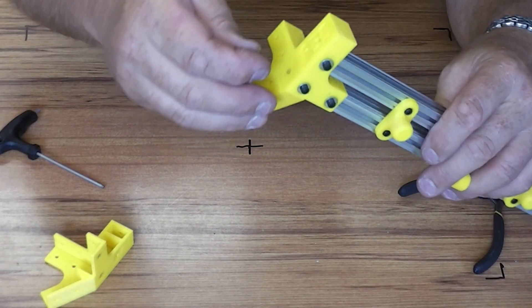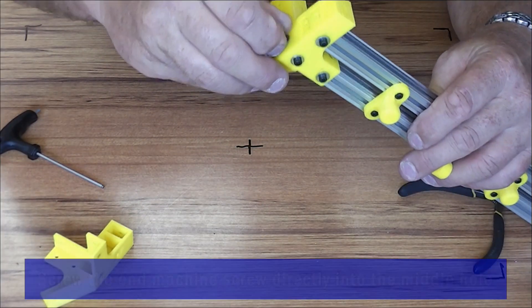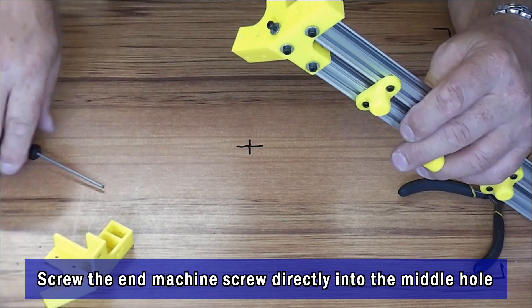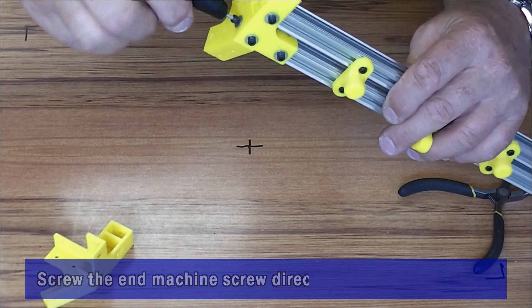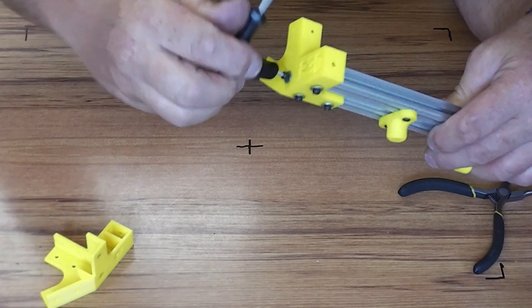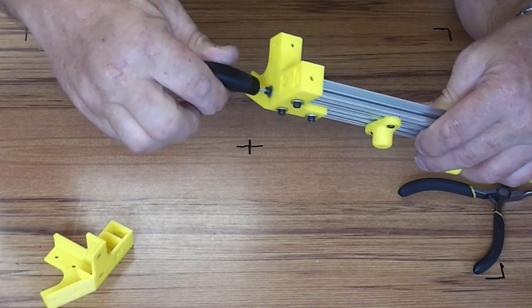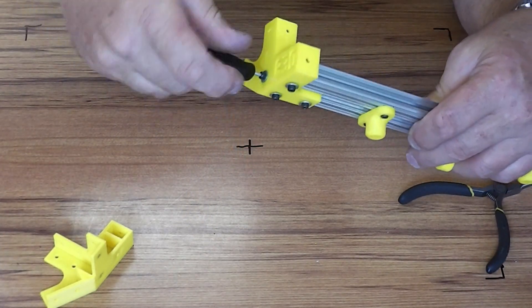So the end one goes into the end hole of that top rail and that just locks everything together very securely. You don't need to tap this hole. You can just screw the machine screw in.